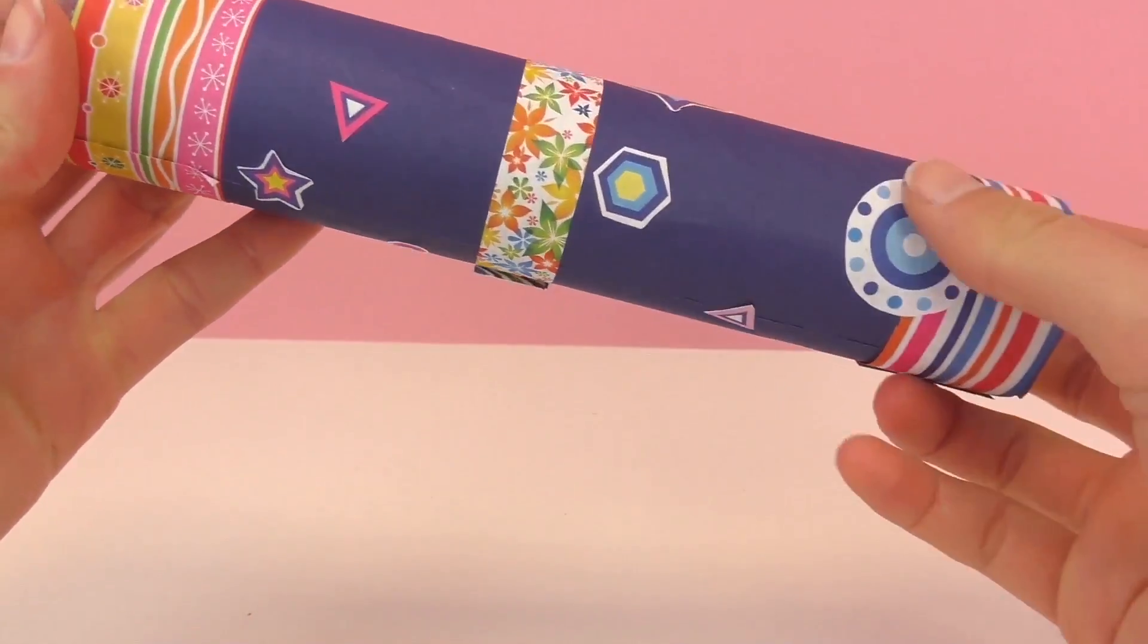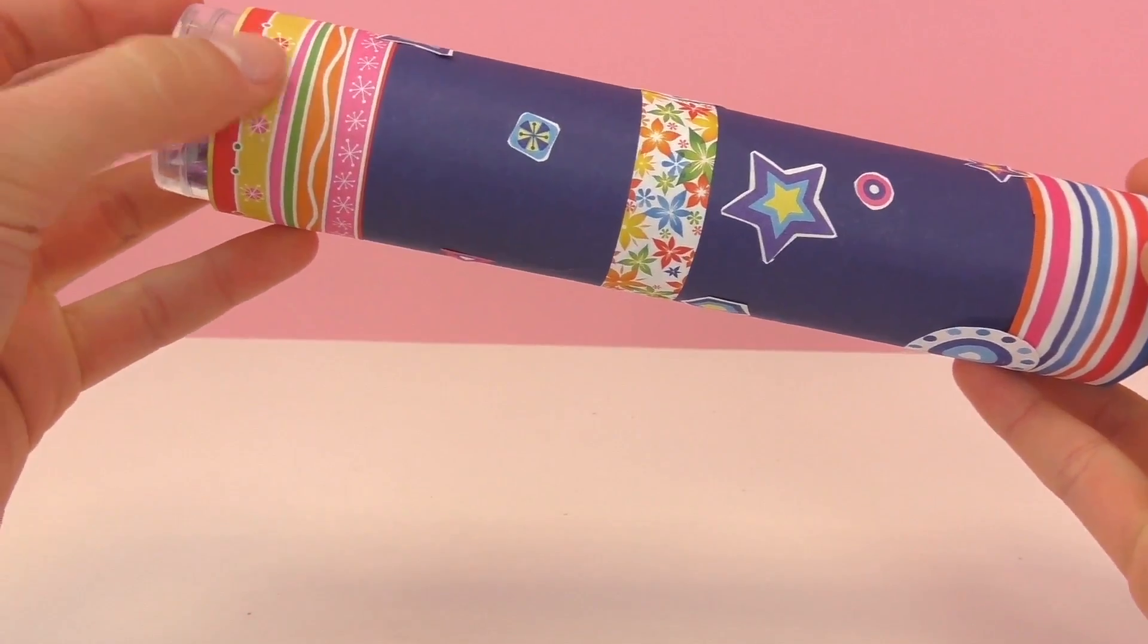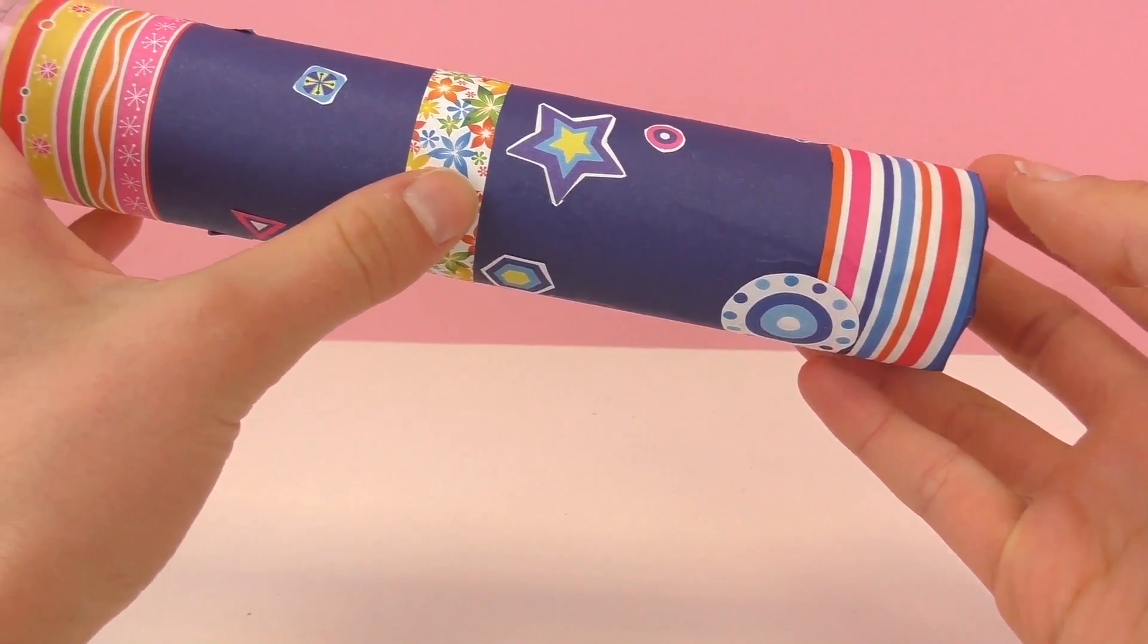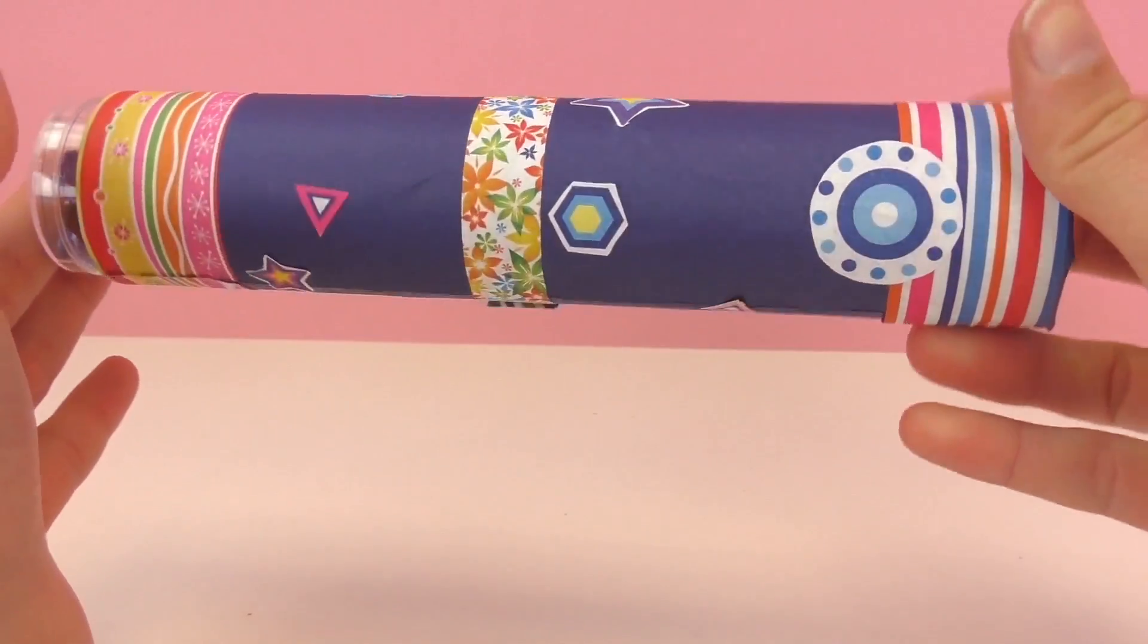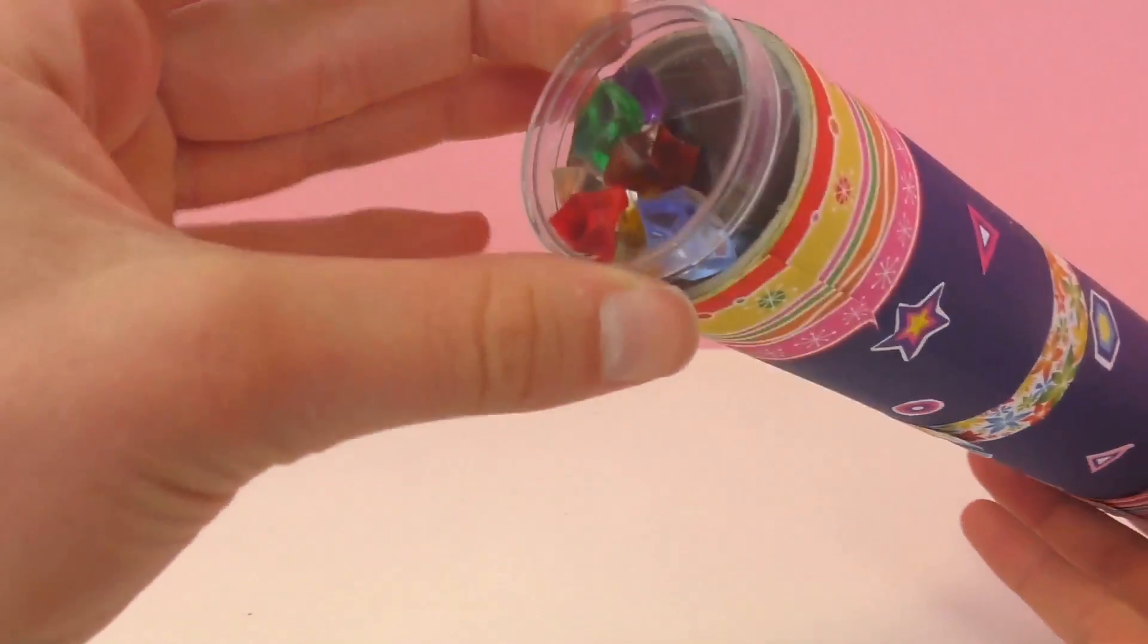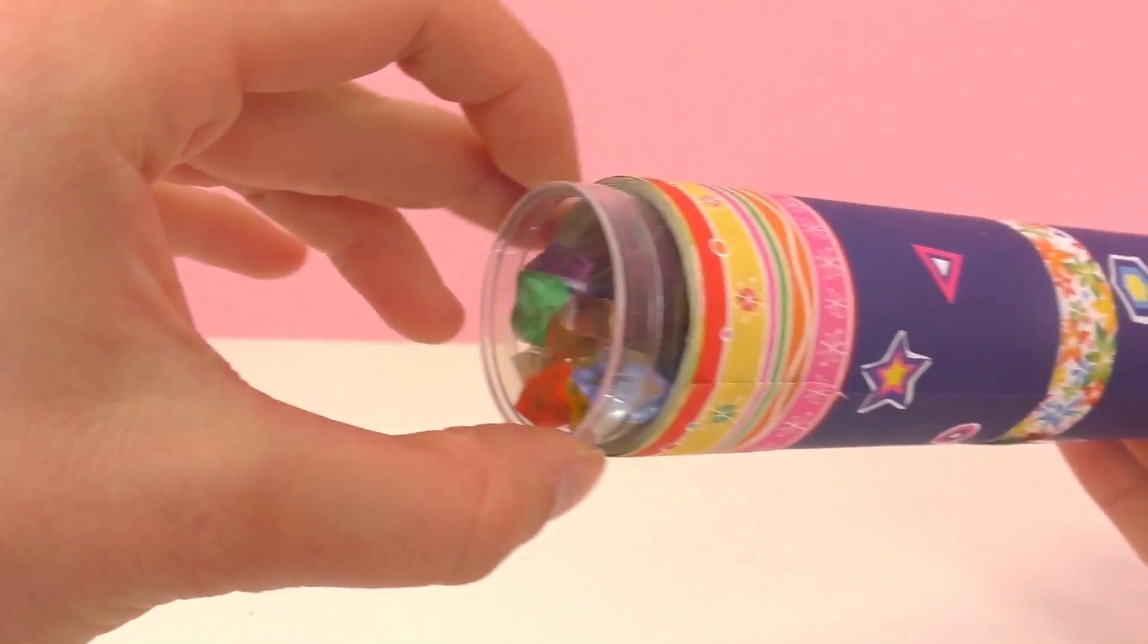So here my kaleidoscope is all decorated. I added some bands here as well as some stars and polka dots. In the comments, if you're doing this project, I'd like you guys to write how you decorated your kaleidoscope.